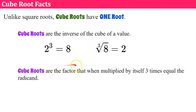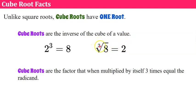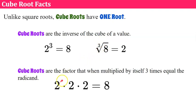Cube roots are the factor that when multiplied by itself three times equals the radicand. So two times two times two is equal to eight. Eight is our radicand. Two times two times two is eight, two cubed is eight, and the cube root of eight is two.